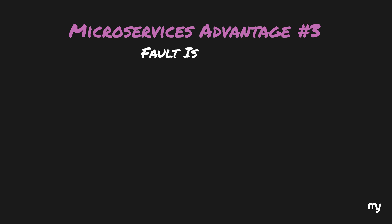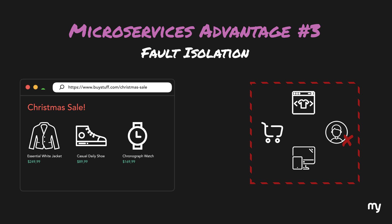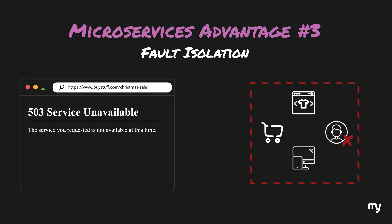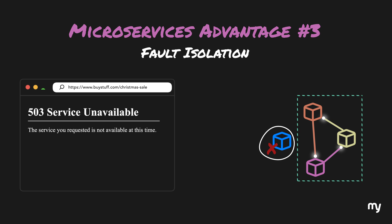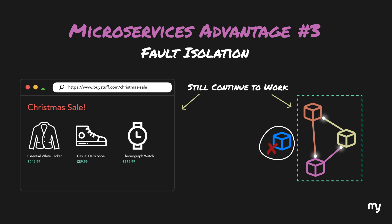Another advantage is fault isolation. In a monolith, if something goes wrong the whole application goes down and every user is affected. However, in a microservices architecture, if something goes down in the account management module, only that module suffers. The remaining parts of the application — like browse, search, and checkout — will still continue to work, meaning users could still place orders.